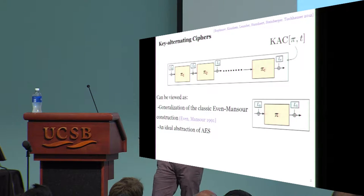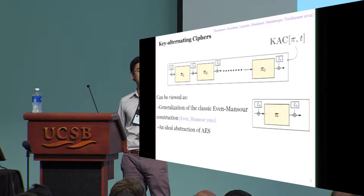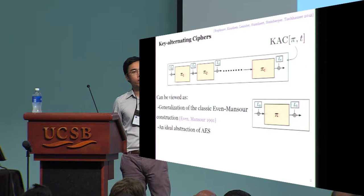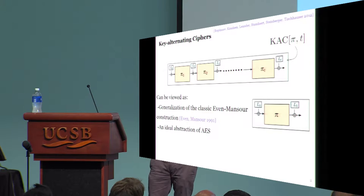This is the key alternating cipher or KAC construction introduced by Bogdanov et al. This object has received quite a lot of attention lately, and for the case of 10 rounds, you can view it as an ideal abstraction of AES.